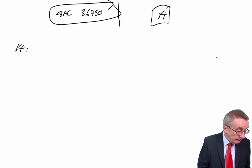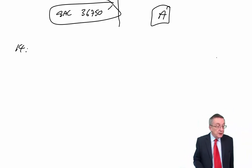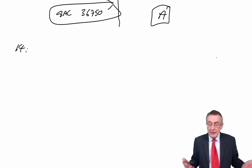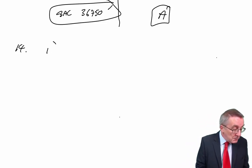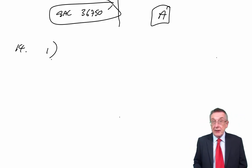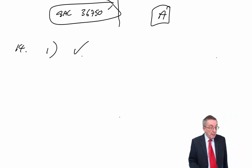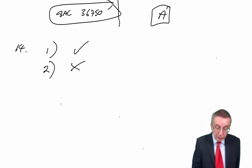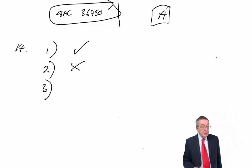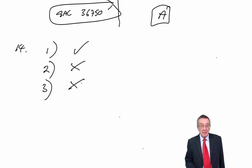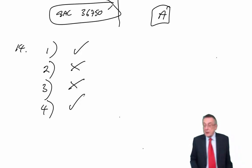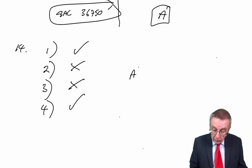Number fourteen. Which two of the following items must be disclosed in the note to the financial statements for intangible assets? Number one: the useful lives of intangible assets capitalised in financial statements — yes, that has to be disclosed in the note. Number two: a description of development projects undertaken during the year — no, you're not required to describe them. Number three: a list of all intangible assets purchased — no, we're not required to list them. Number four: the impairment losses written off intangible assets during the period — yes, that is required. This is very much a 'learning the rules' question. The answer is one and four — answer A.